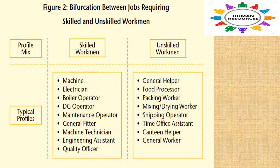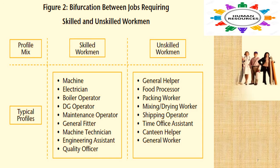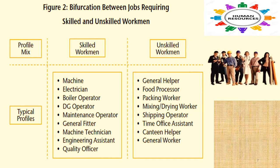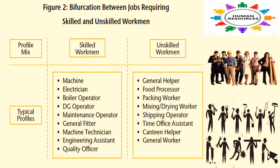In local terms, the organized sector or formal sector in India refers to licensed organizations, i.e. those who are registered and pay GST. These include the publicly traded companies, incorporated or formally registered entities, corporations, factories, shopping malls, hotels and large businesses. The unorganized sector, also known as own account enterprises, refers to all unlicensed, self-employed or unregistered economic activities such as owner-run general stores, handicrafts and handloom workers, rural traders, farmers, etc.